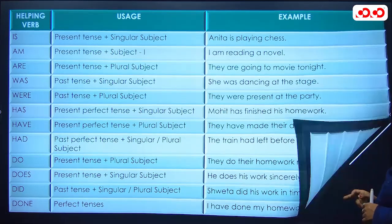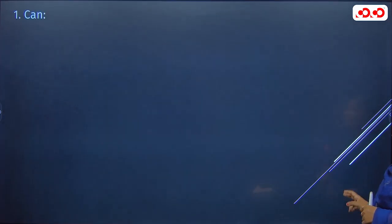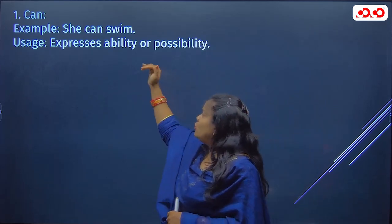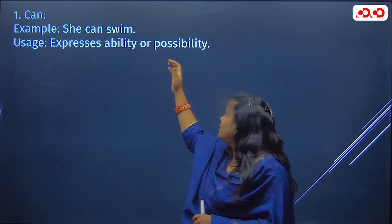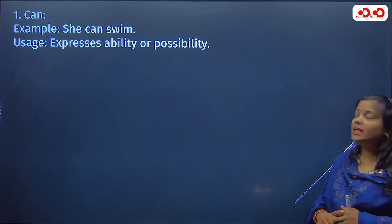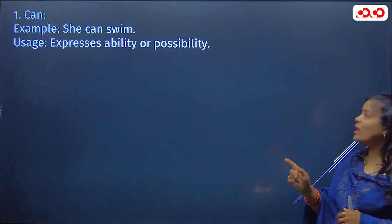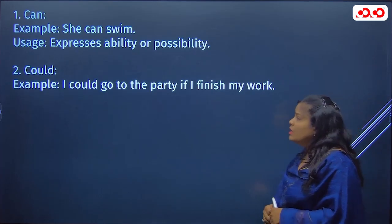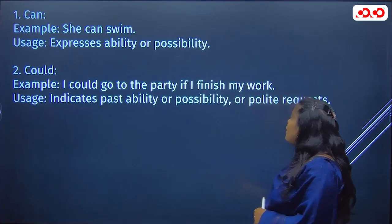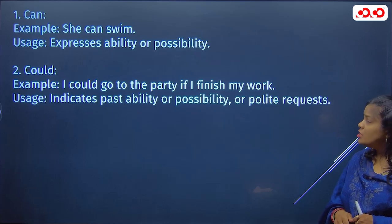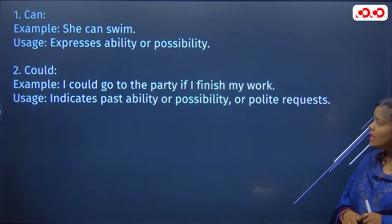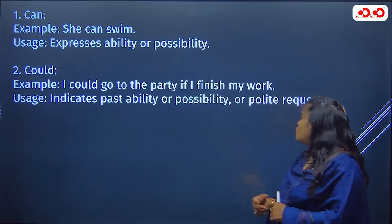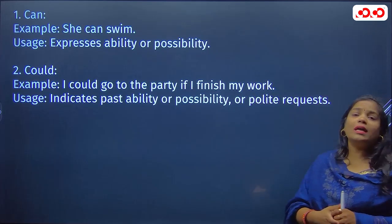Now let's talk about modal auxiliary verbs. First, 'can' — example: 'She can swim.' Can is used to express a certain ability or possibility. Next, 'could' — example: 'I could go to the party if I finish my work.' Could is used to indicate past ability or possibility, or to make a polite request.